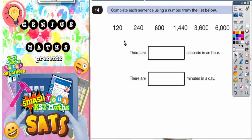Question 14: Complete each sentence using a number from the list below. There are several numbers to choose from. There are blank seconds in an hour. Well, there are 60 seconds in one minute and then there are 60 minutes in one hour.